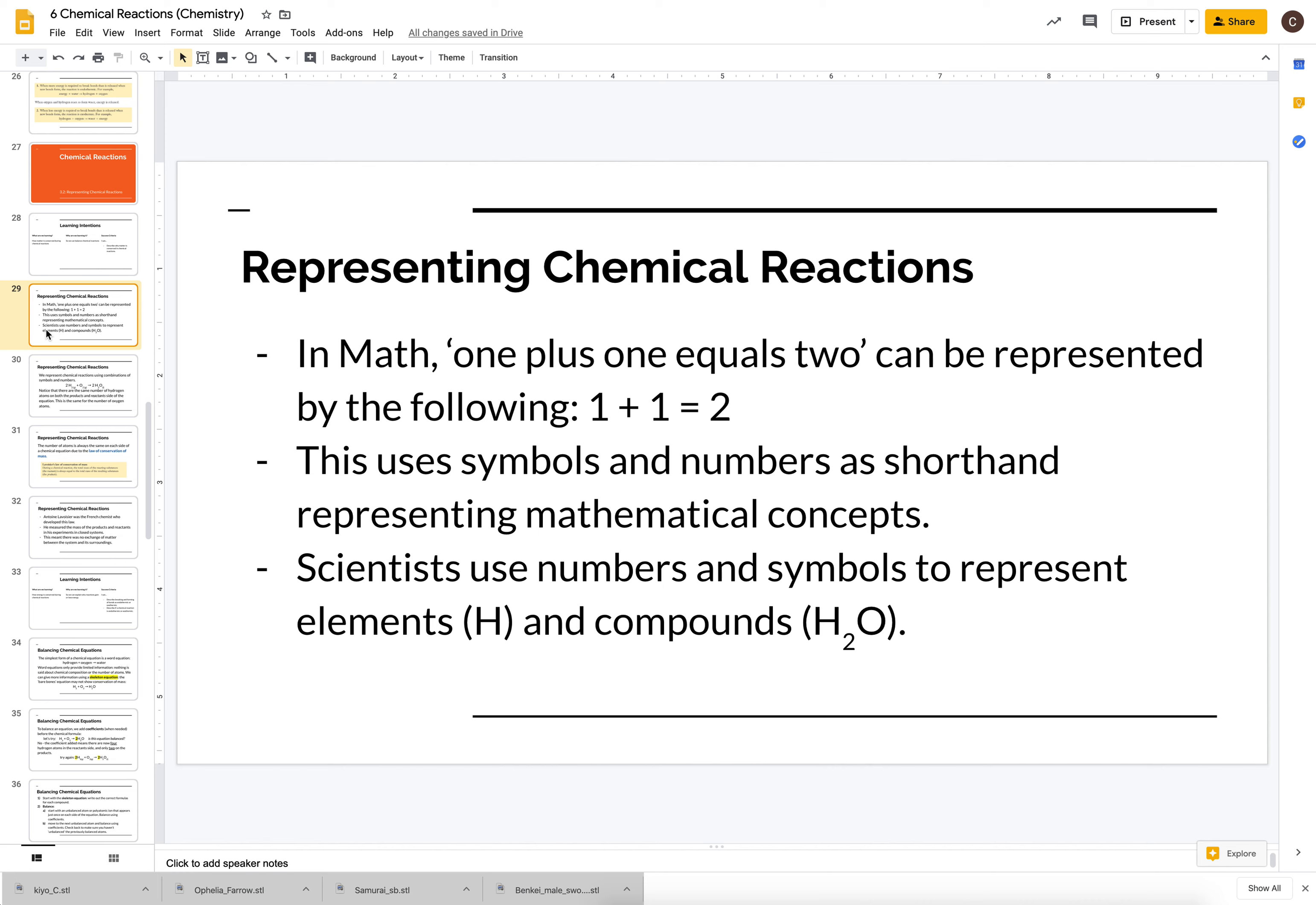So in math we can say 1 plus 1 equals 2, and when we do that we can also write it down. We can represent it using symbols. The numbers 1 and 2 are actually symbolic. They're not the value itself. They're a symbol we use to communicate that value. Same thing with the plus sign and the equal sign. The plus sign is a symbol for addition and the equal sign is a symbol saying that both sides of the sign are equivalent to each other.